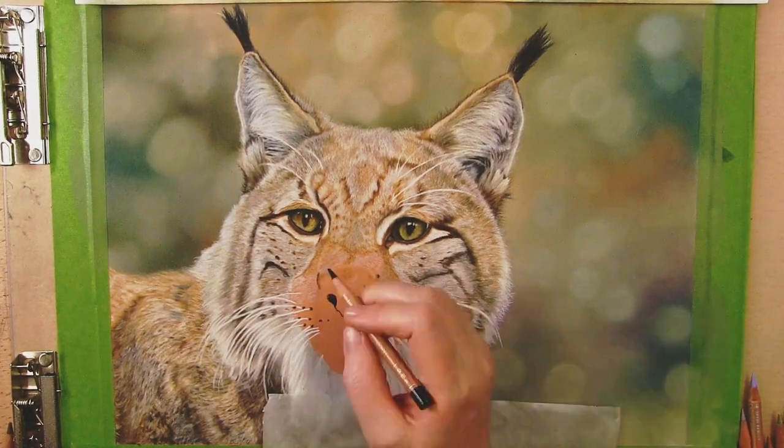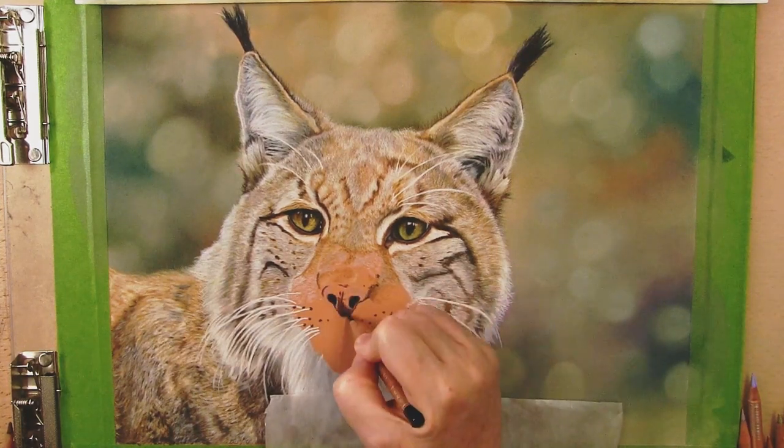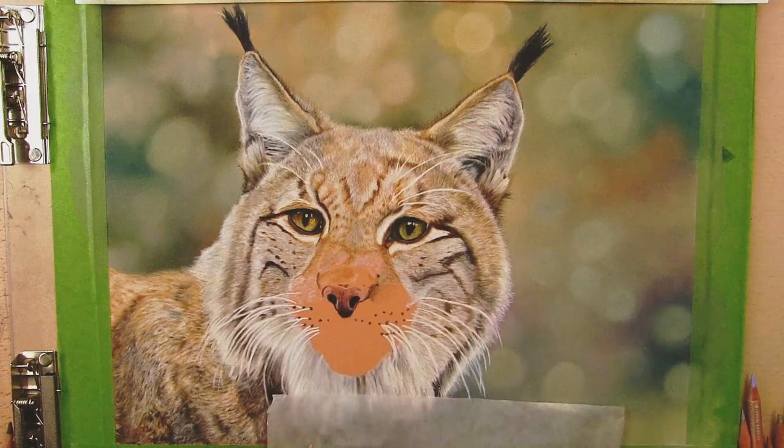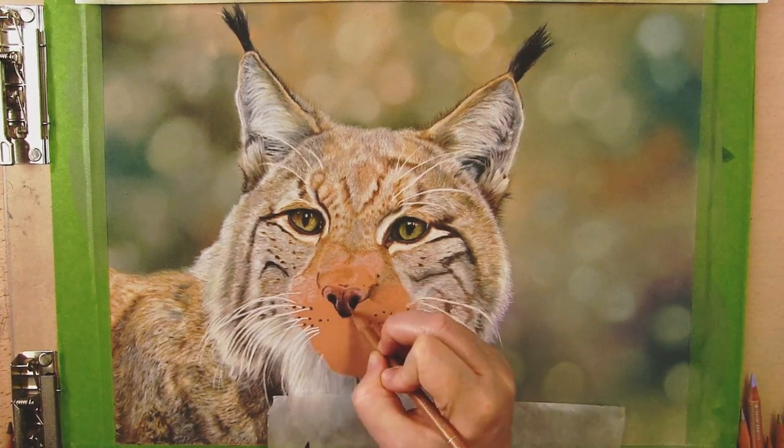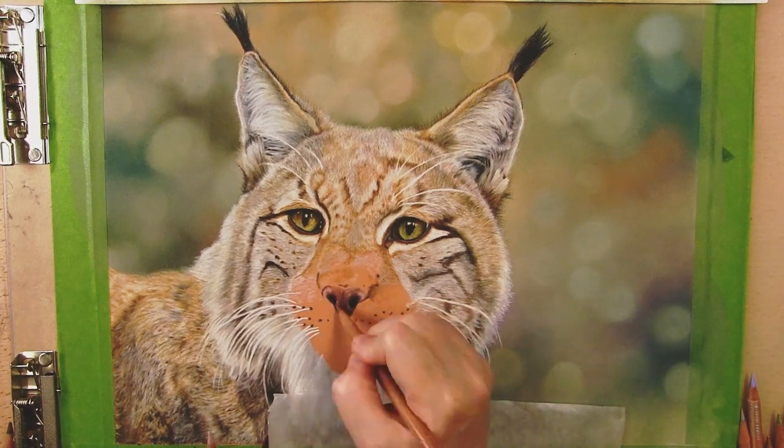Once I got to the front where there was a bunch of white I then sort of went back to my usual method and put in a base of white first. Since there were not a lot of variations to the fur in such a tiny area it was much easier to do that here.